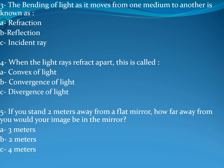Moving to number four. Chahad: when light rays refract apart, this is called convergence or divergence of light. The answer is divergence of light — circle C. For example, when light rays refract together, that is called convergence of light. Excellent.